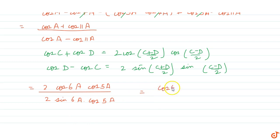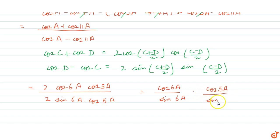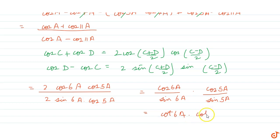We know that cos(θ)/sin(θ) = cot(θ), so after applying the formulas we get cot(6a) multiplied by cot(5a), which is our right hand side. Thus our question is proved.